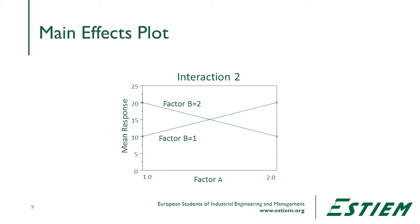Looking at the next plot, we see something totally different — an interaction effect. As we change A from low to high, factor B inverses its relationship. This inverted relationship is called an interaction effect: as one goes high, the other goes in the opposite direction.